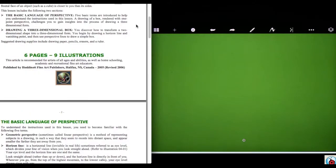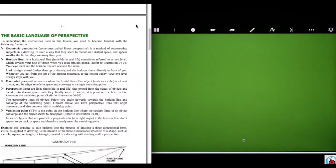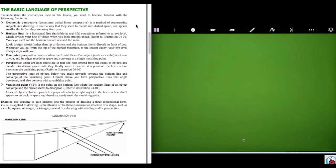Here are some of the vocabulary terms we'll be using today as we discuss the basic language of perspective drawing: geometric perspective, horizon line, one-point perspective, perspective lines, and vanishing point. This is a finished drawing of what we're about to create.